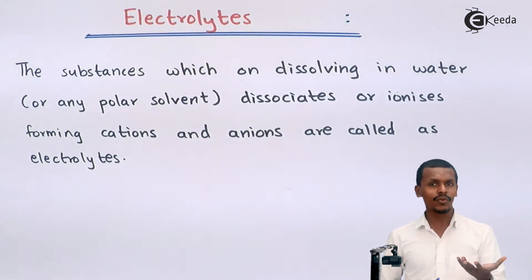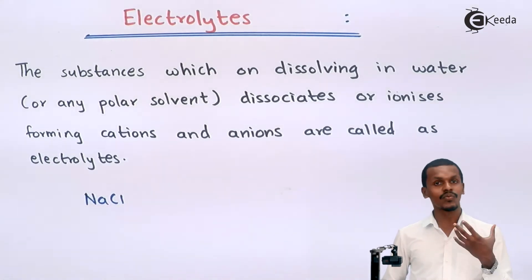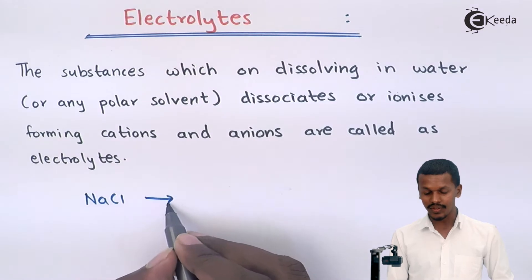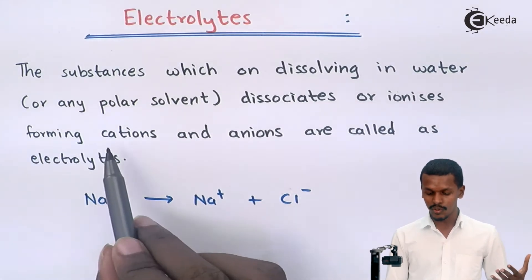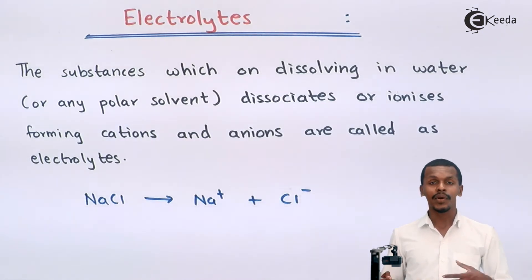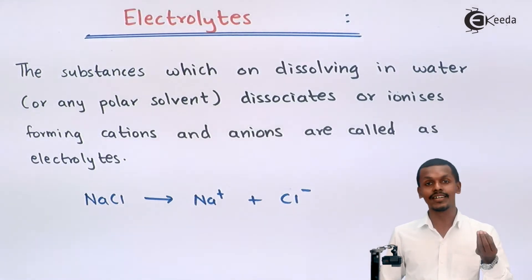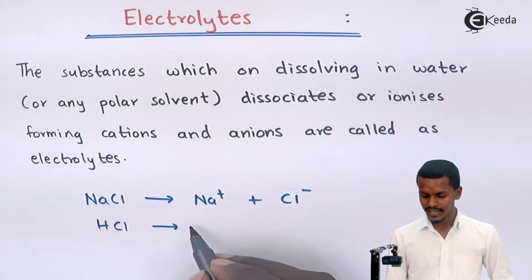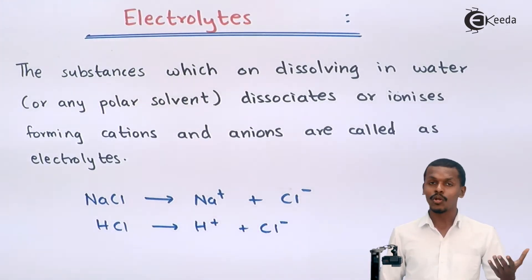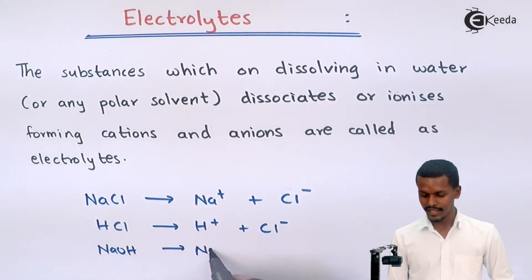Now we are going to talk about a few examples of electrolytes. NaCl, when dissolved in water, gives us Na⁺ along with Cl⁻. Similarly, acids are substances which can dissociate completely in water or any polar solvent, forming cations and anions. For example, HCl, which is an acid, dissociates into H⁺ and Cl⁻. And a strong base like NaOH dissociates into Na⁺ and OH⁻.